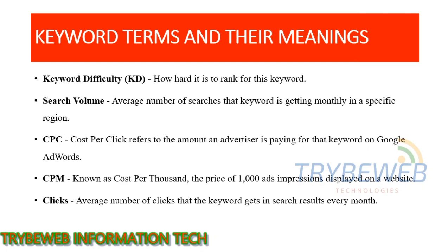CPC, or cost per click, refers to the amount an advertiser is paying for that keyword on Google. Cost per click differs based on how valuable that keyword is — the CPC for insurance keywords is higher than the CPC for entertainment keywords. If you are looking to make more money as a publisher for Google AdSense or any advertising agency, then you need to target high CPC keywords.